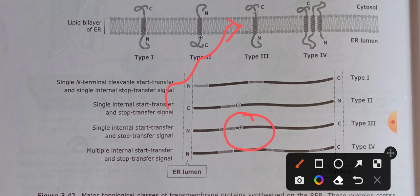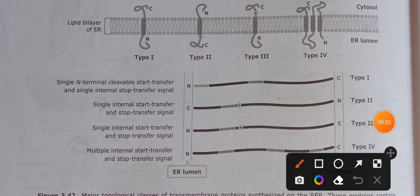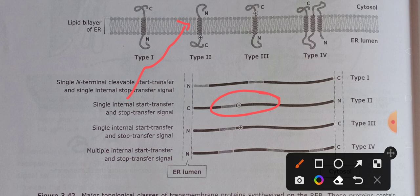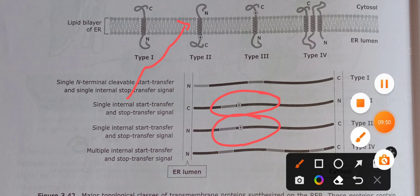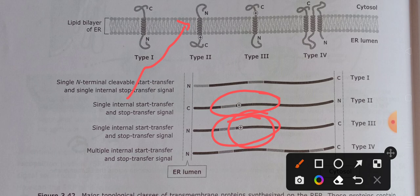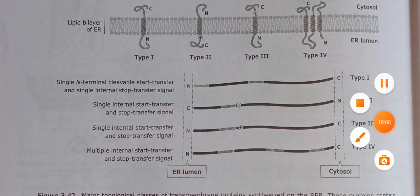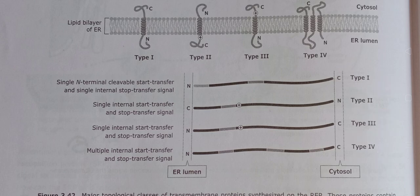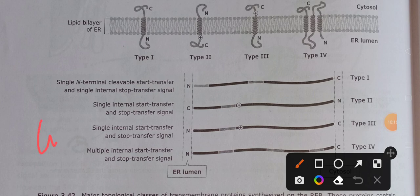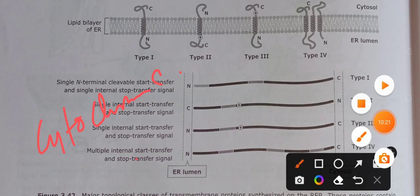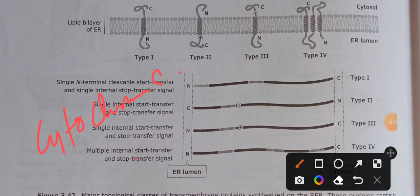The distinction in Type 3 is that the high density of positively charged amino acids is at the C-terminus side of the stop-transfer signal sequence — which is why the C-terminus faces the cytosolic side. To summarize the positive inside rule: whichever terminus of the stop-transfer sequence has high positive charge density, that terminus faces the cytosol. An example of a Type 3 transmembrane protein is cytochrome P450.